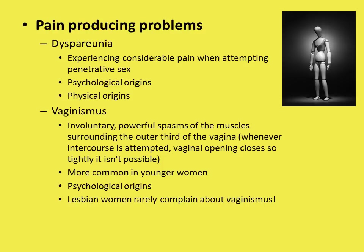Vaginismus is more common among younger women and women raised in authoritarian, oppressive homes — high-controlling homes with very little emotional warmth. Causes also include negative attitudes about sex, being raised in a very religious household, sexual abuse or trauma, and even having undependable husbands who they think are cheating or can't count on. This is only a problem for couples that include penetration in their sexual practices.